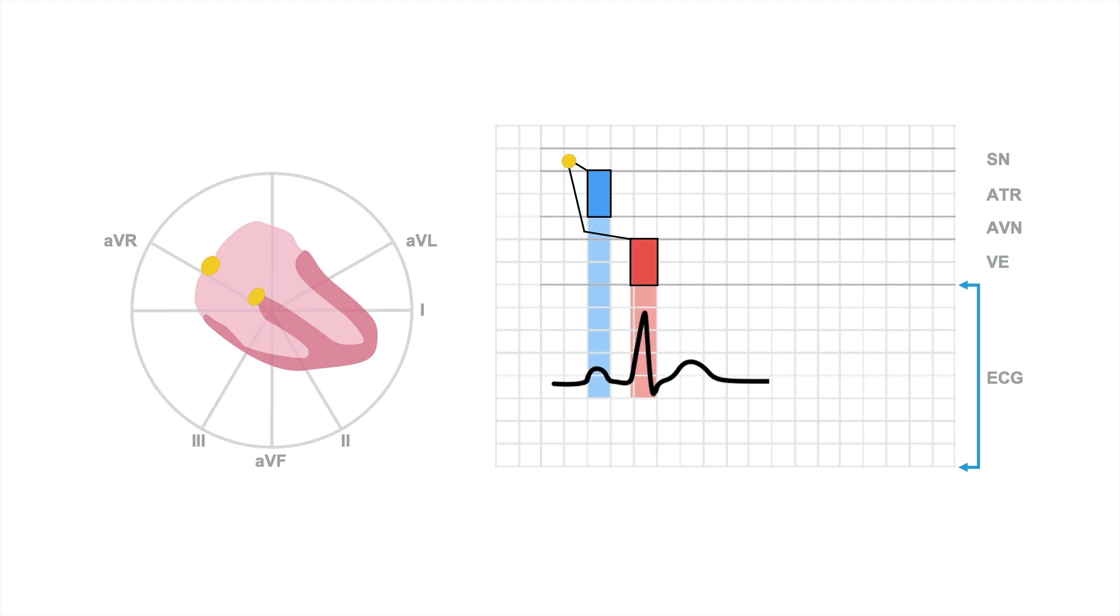And down here, we see what's happening on the ECG. So, once the sinus node depolarizes, this electrical activity travels through the atria in order to cause atrial depolarization depicted by the blue box or by the P wave on the ECG.